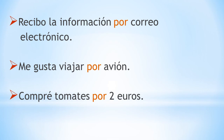Por is also used to tell about the medium of anything. Por ejemplo, recibo la información por correo electrónico. I receive the information by email. Me gusta viajar por avión. I like to travel by aeroplane. Lastly, por is used in terms of money. Por ejemplo, compré tomates por dos euros. I bought tomatoes for two euros.